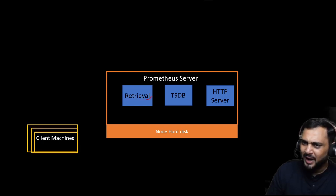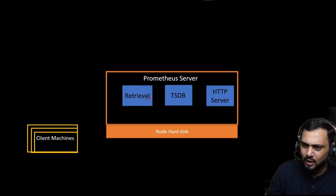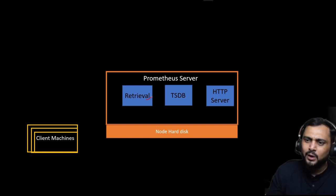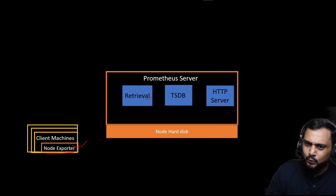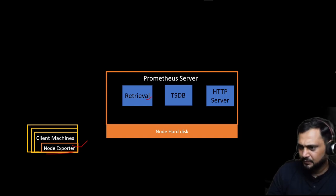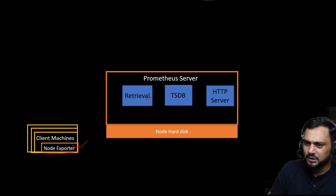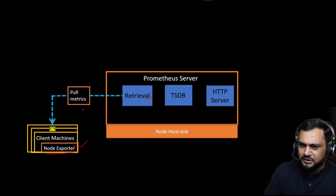By default, client machines don't expose metrics in the required format — we need a package that collects the data and converts it into metrics form. For that reason Prometheus offers a binary package called node exporter. We need to install this node exporter on each client machine, and then configure the Prometheus configuration file to pull metrics from those node exporter machines every 15 or 30 seconds. The process of Prometheus pulling metrics from node exporter is called scraping.